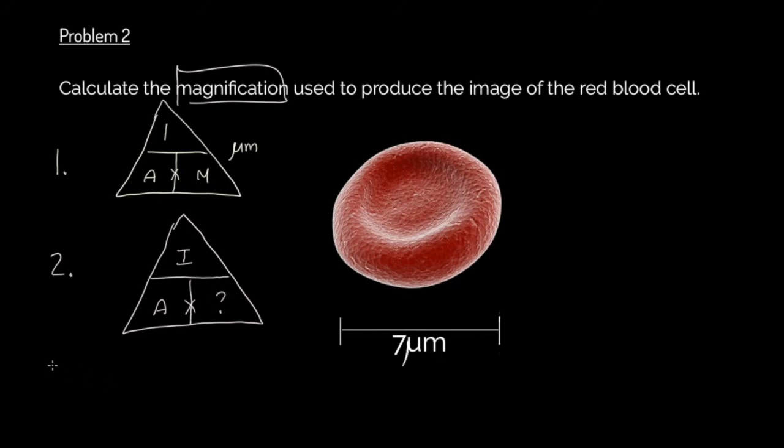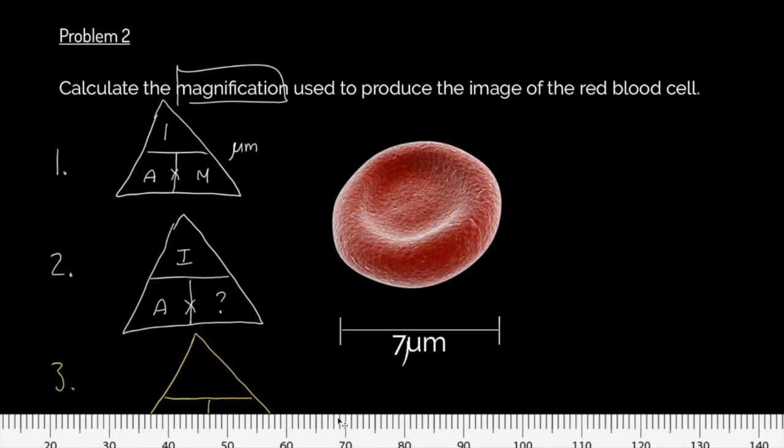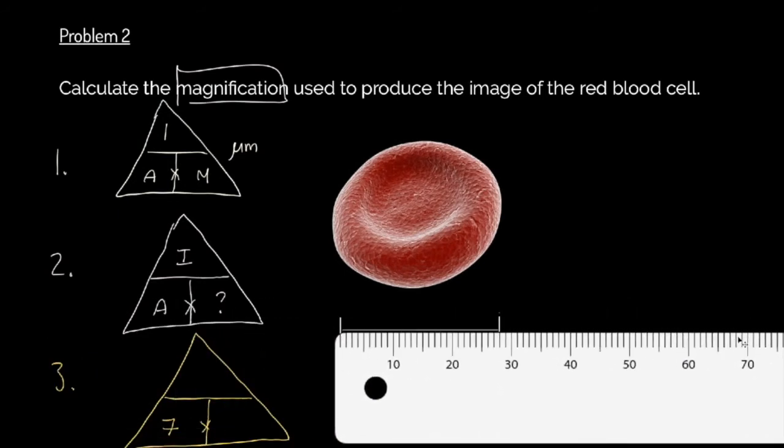So stage three, we can now introduce some numbers. So let's do that. So what we've got here is we've got the actual size, which is seven micrometers. Now we've got to get the image size. Now how are we going to do that? Well, we're going to open up our ruler. We're going to move our ruler into position. And we are literally going to measure this distance. So here, there's my ruler in place. So we're going from here. We're 10, 20, 25, 26, 27, 28 millimeters.